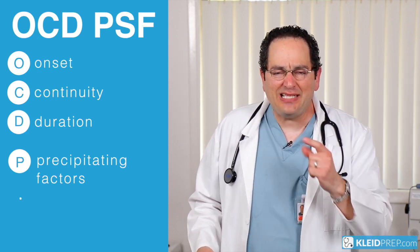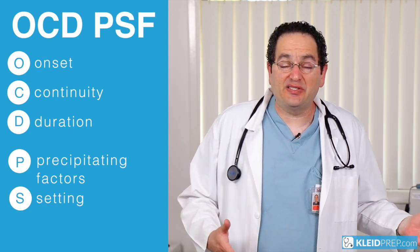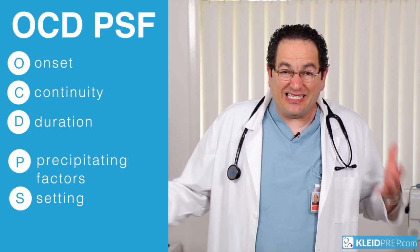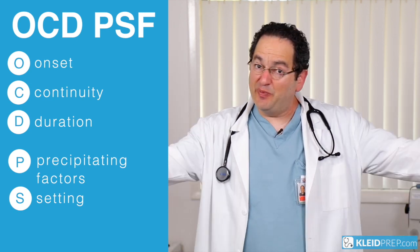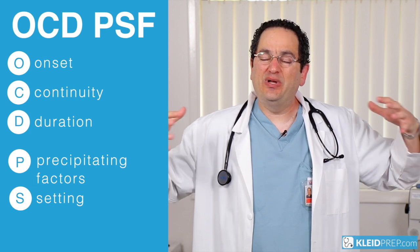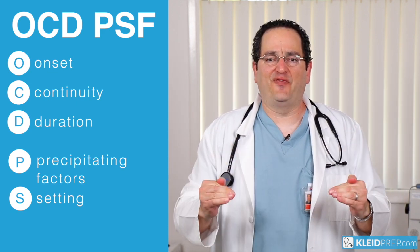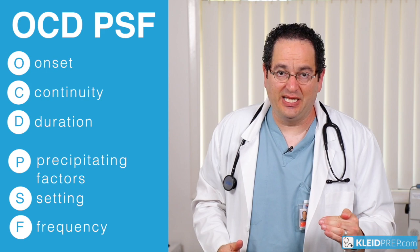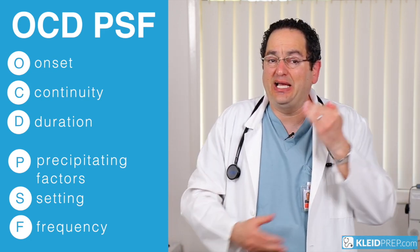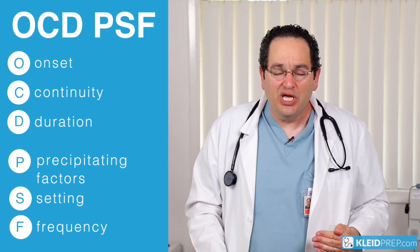The S is the setting. When does this occur? Does it occur when you're sleeping, when you're driving, when you're at home? Does the setting have anything to do with it? Does it happen when you're out in the sun? What's going on with the setting? And then finally, the F is frequency. How often does this happen? Is it happening all the time? Give me some parameters that I can use.